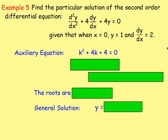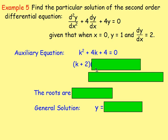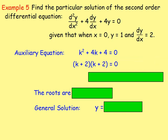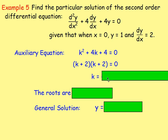To solve that we factorise, giving us (k + 2)(k + 2) = 0. Therefore k = −2, and k = −2 again — really it's the same number. So k equals negative 2, and that is a repeated root.